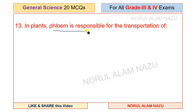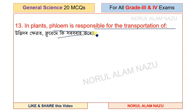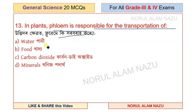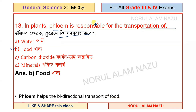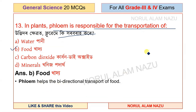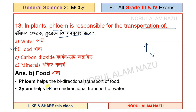Question number 13: In plants, phloem is responsible for the transportation of what? The options are water, food, carbon dioxide, and minerals. Phloem transports food and works in a bidirectional manner.